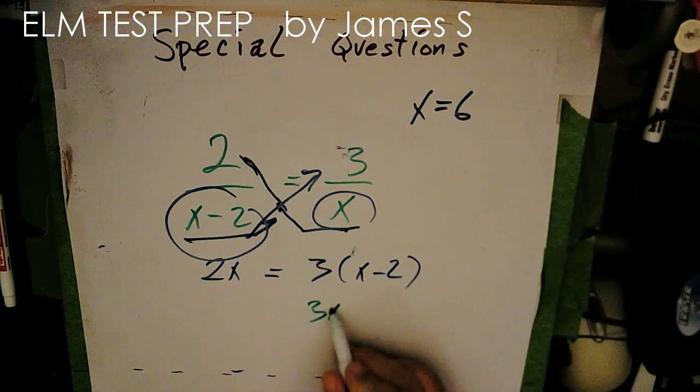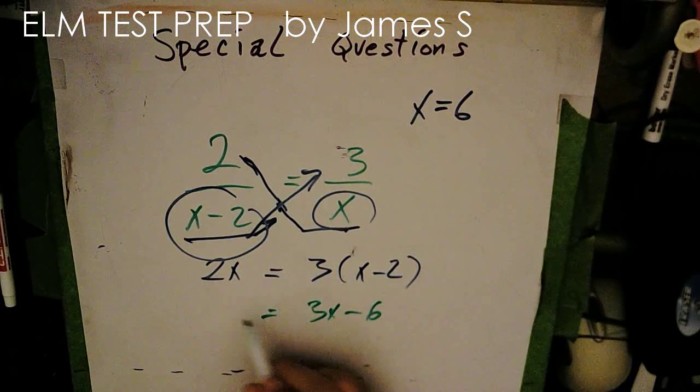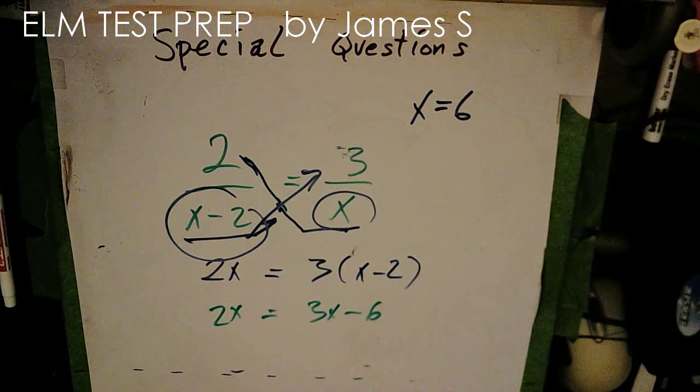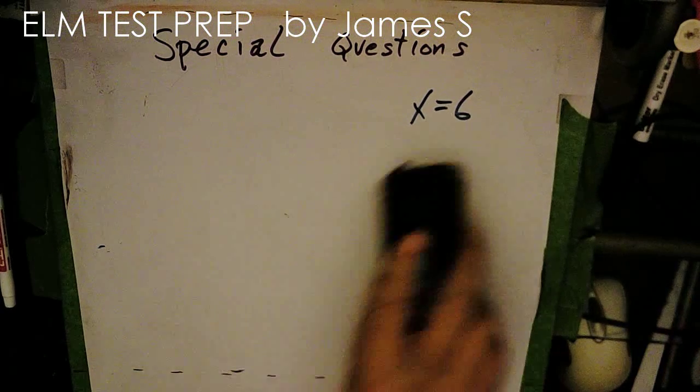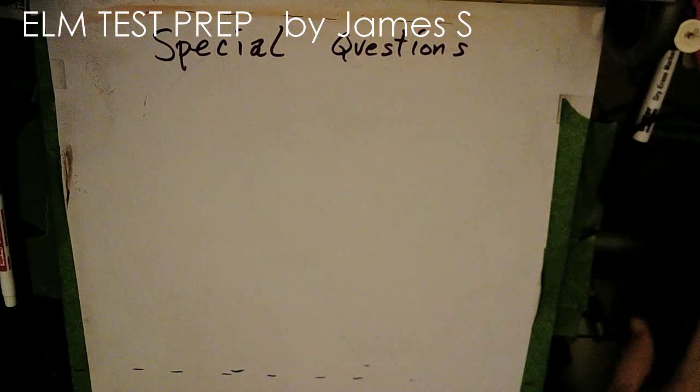And again, we'll get 3x minus 6 equals 2x. And we'll find our answer the same. So those are three different ways of doing that kind of a problem.